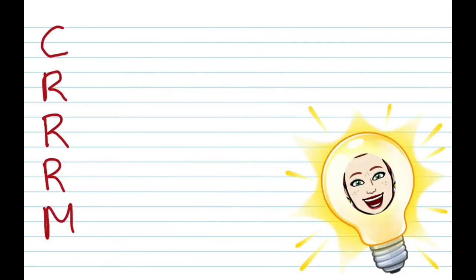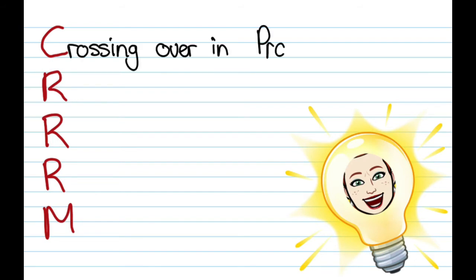A good way to remember the sources of variation would be C, three R's, and then an M. The C stands for crossing over. Always good to mention that this happens in prophase one.